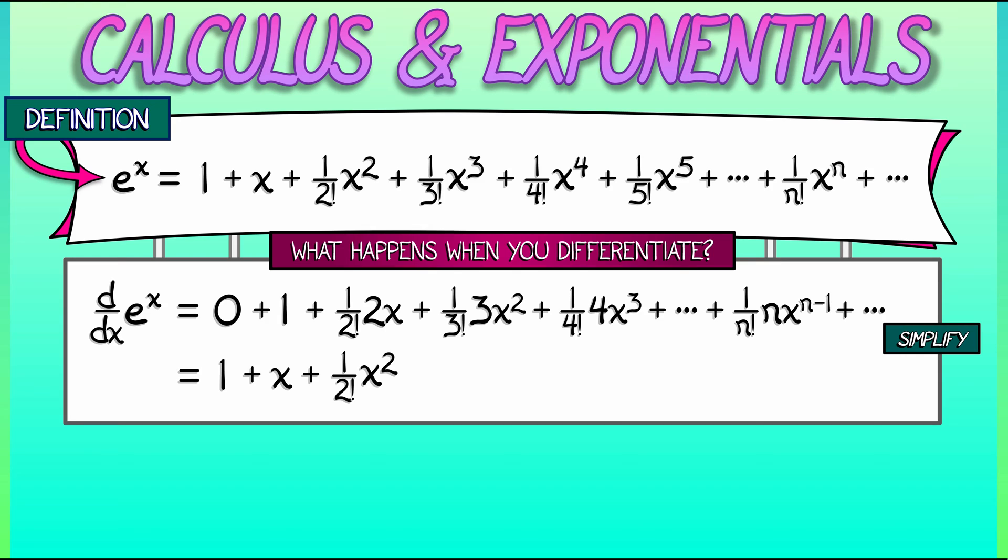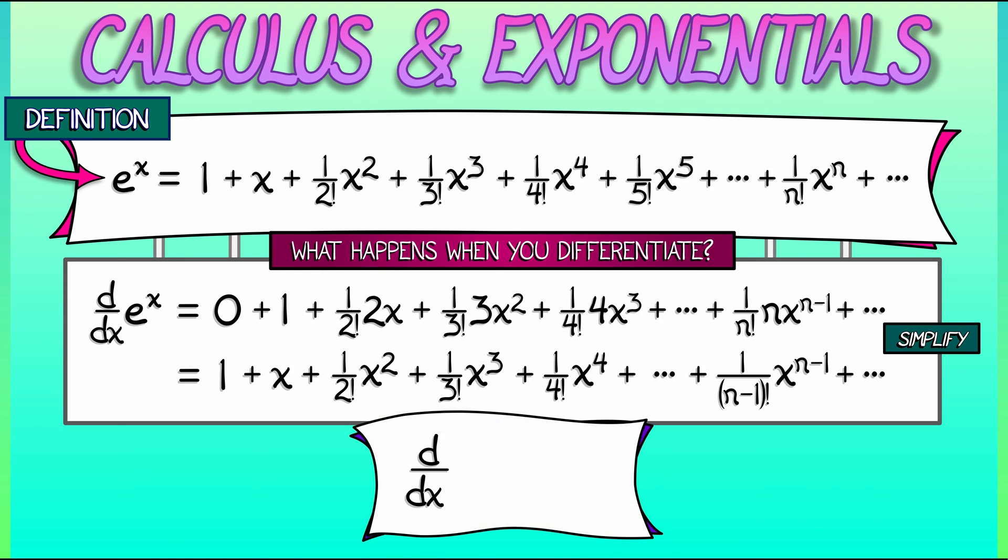I see where this is going. The 4x cubed divided by 4 factorial simplifies to 1 over 3 factorial times x cubed. And this keeps going until that nth term, its derivative is 1 over quantity n minus 1 factorial times x to the n minus 1. Looking at this net answer, we see again the series for e to the x. So, the derivative of e to the x is e to the x. You may recall learning that.